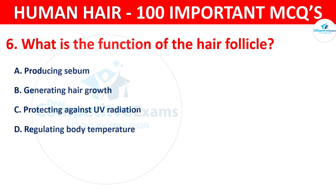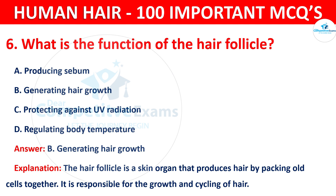The correct answer is B — generating hair growth. The hair follicle is a skin organ that produces hair by packing old cells together. It is also responsible for the growth and cycling of hair.